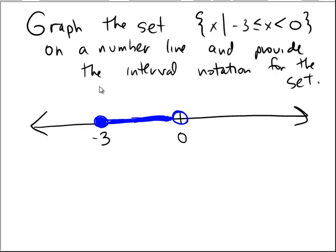So there's our interval notation. Some people use brackets for the closed dots, and some people use parens or parentheses for the open dots. The main reason I'm a big fan of the brackets and parentheses notation as opposed to the closed dot and open dot is because it makes the interval notation so much easier.